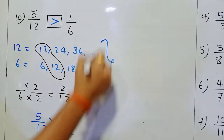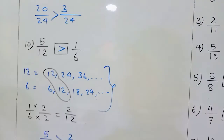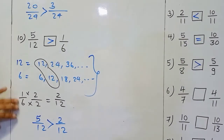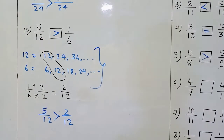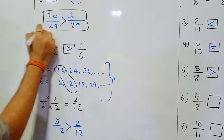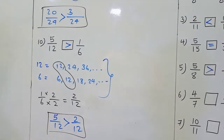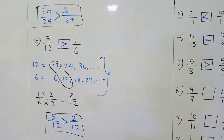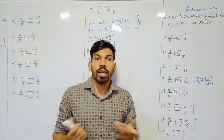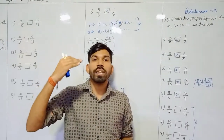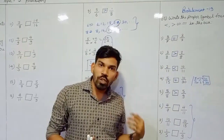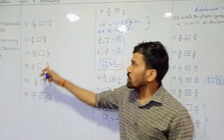These working lines are optional — whether you write them or not is up to you. In rough work, you should directly convert into like fractions, do the comparison, and put the proper sign in the box. This is how we do the comparison of the given unlike fractions.